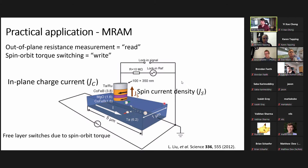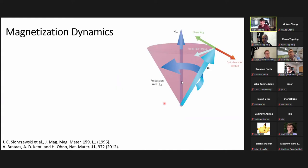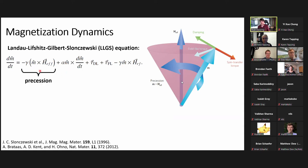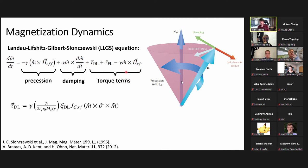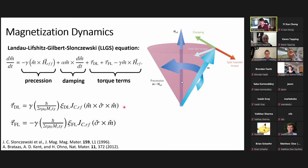What are the dynamics behind this switching? We model the magnetization precessing around an effective field using the LLGS equation, which has a precession term, a damping term with coefficient alpha, and torque terms. These torque terms describe two types of torques: a damping-like torque and a field-like torque. For an in-plane sample, the damping-like torque acts in-plane and the field-like torque acts out-of-plane. The damping-like torque can act as an anti-damping torque, causing the magnetization to precess and flip — making it a term of great interest to the field.